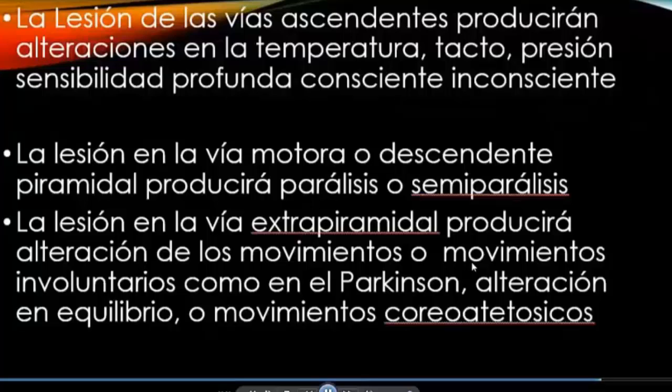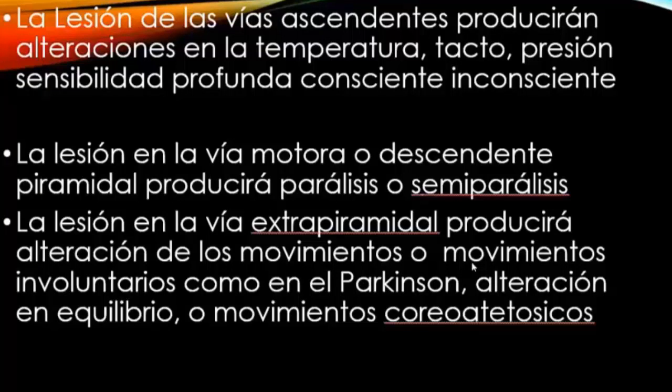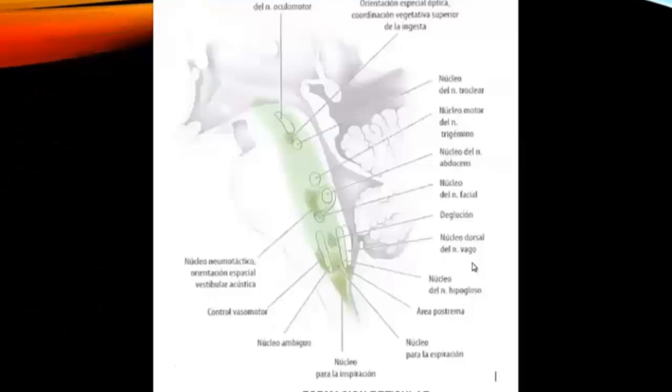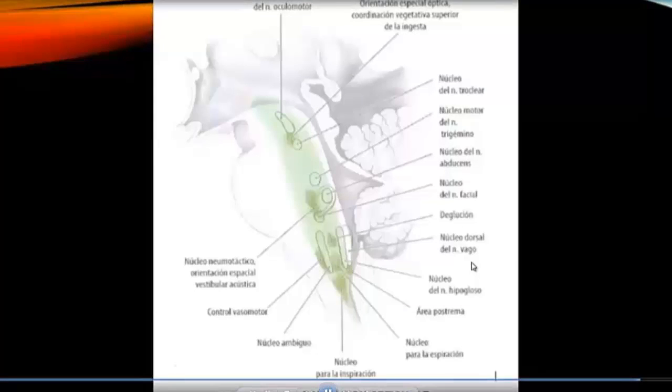The lesion of the ascending pathways will produce alteration in temperature, touch, and deep sensibility, conscious or unconscious. The lesion of the motor pathway will produce paralysis or semiparalysis. Lesions of the extrapyramidal pathway will produce alteration in movements or involuntary movements, as in Parkinson's disease, alterations of equilibrium as in choreoathetosis, or alterations in motor stability.